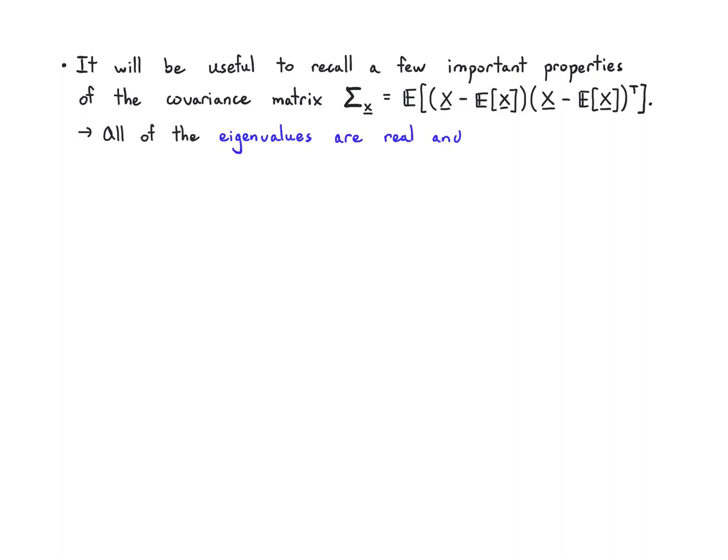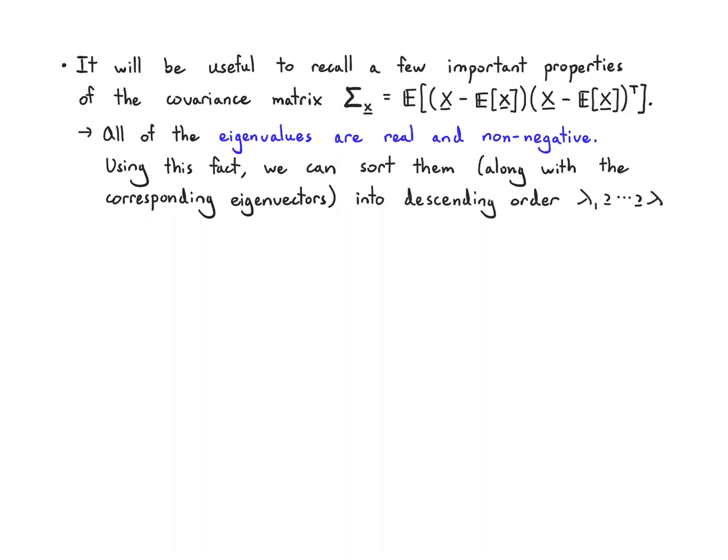It will be useful to recall a few important properties of the covariance matrix Σₓ = E[(x - E[x])(x - E[x])ᵀ]. All of the eigenvalues are real and non-negative. Using this fact, we can sort them along with the corresponding eigenvectors into descending order: λ₁ ≥ λ₂ ≥ ⋯ ≥ λd ≥ 0.